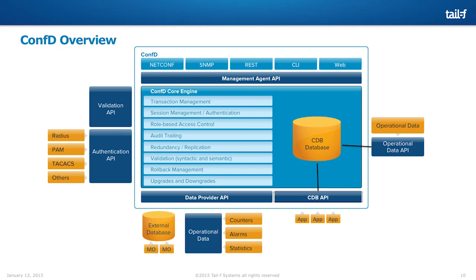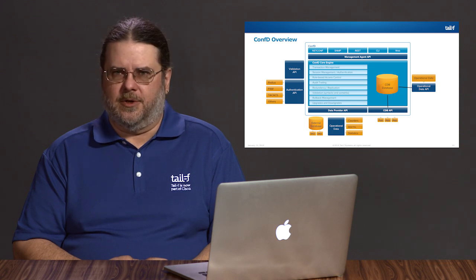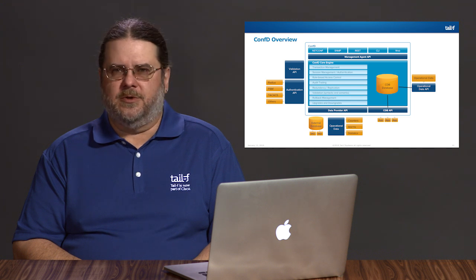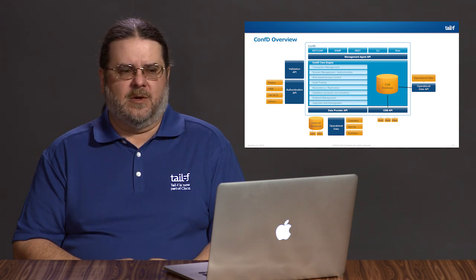The authorization system in ConfD is based upon NACM — the NetConf Access Control Model — with extensions for the other northbound interfaces. The third A of AAA is audit. ConfD provides support for a wide variety of audit information and destinations. You can select different audit levels for different users. That information can be sent to a simple file in the file system, sent to a syslog server, or there's also an API available that your code can attach to, receive the audit information, and format or send it wherever it needs to go.